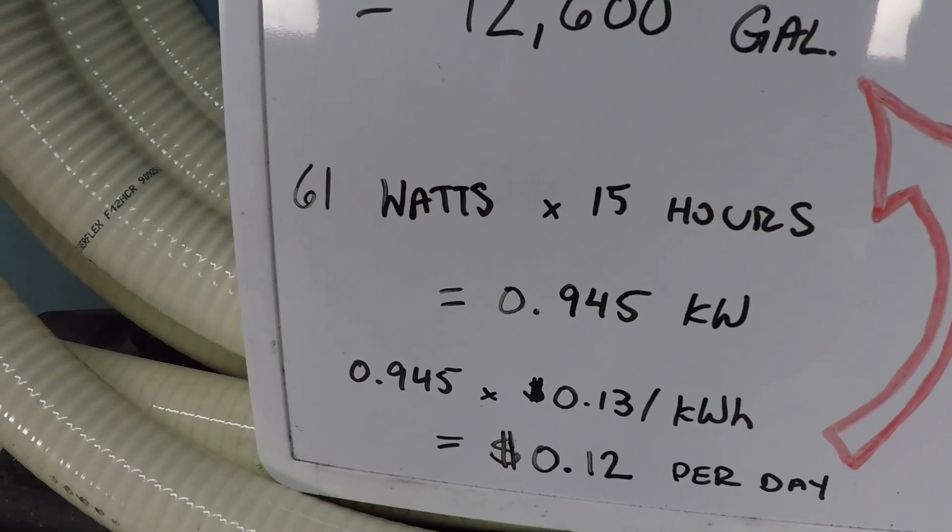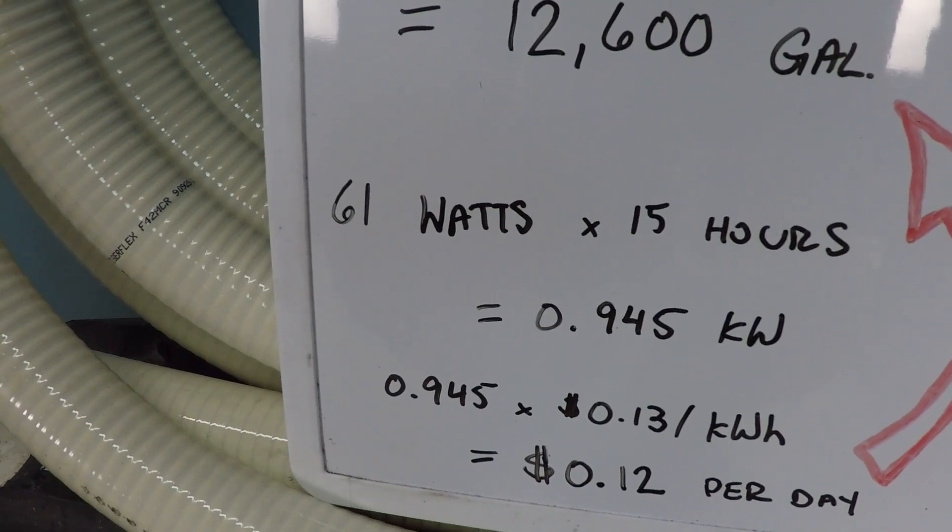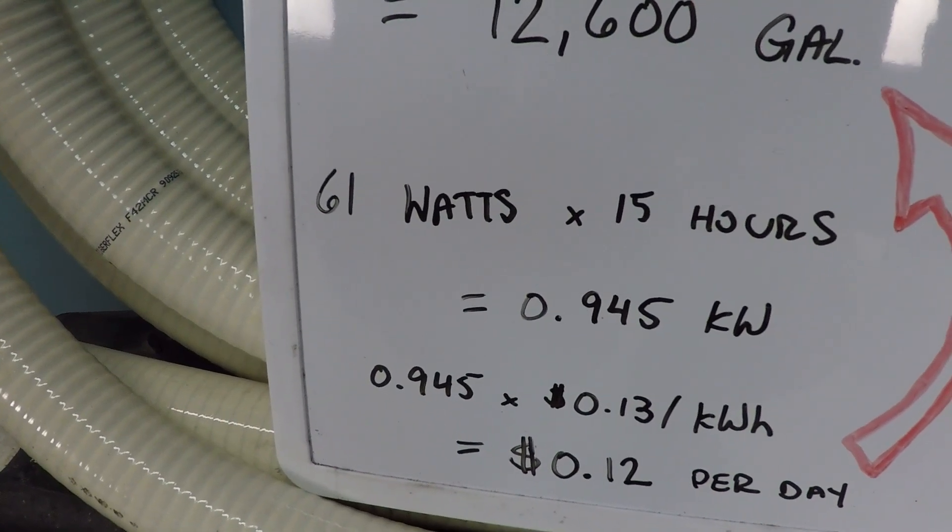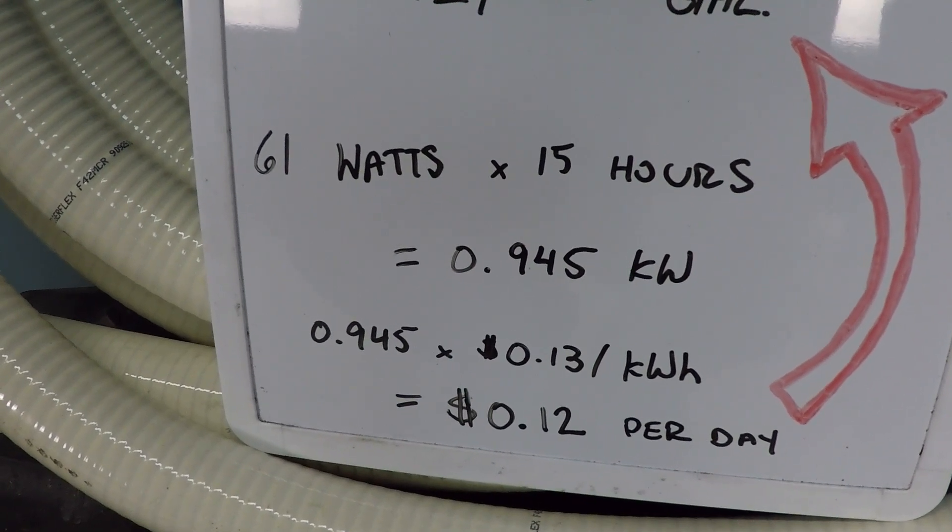When you pay for your power, you pay by the kilowatt-hour, and the national average is 13 cents per kilowatt-hour. We have just under one kilowatt of consumption, so in total that's 12 cents.